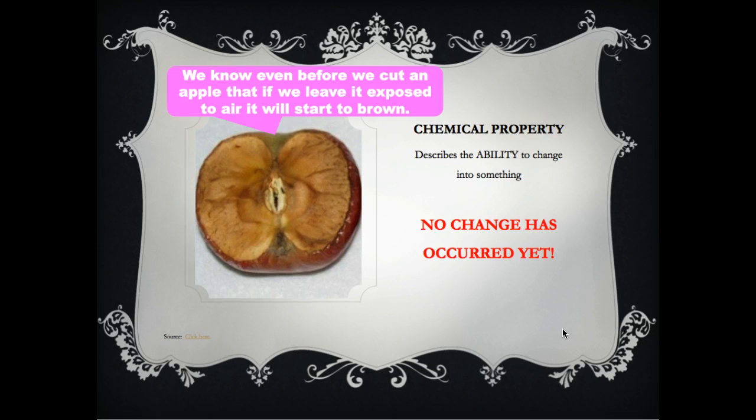Chemical properties are those things that we know can occur and can turn a substance into a new substance, but we don't see it immediately.